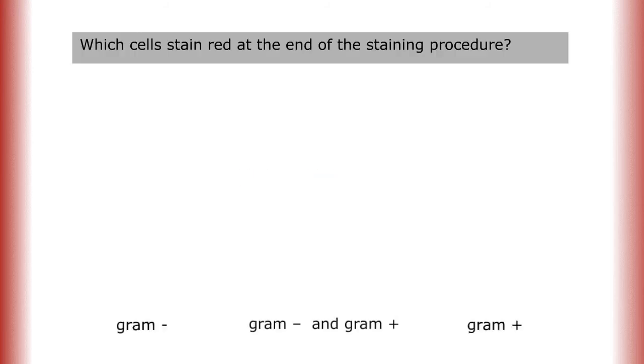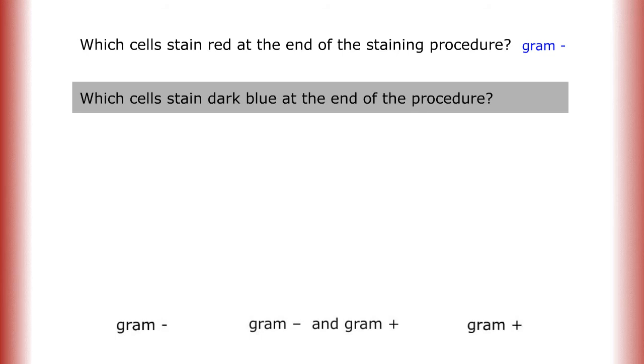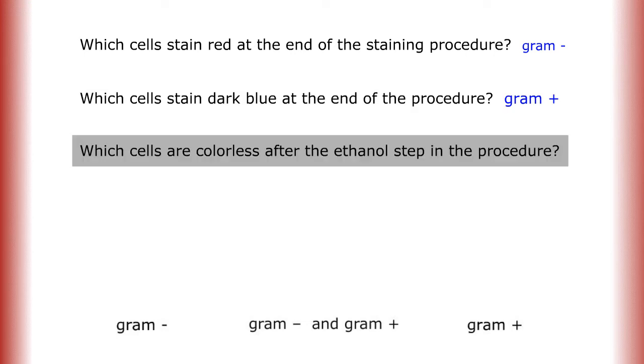Which cells stain red at the end of the staining procedure? Gram-negative. Which cells stain dark blue at the end of the procedure? Gram-positive. Which cells are colorless after the ethanol step in the procedure? Gram-negative.